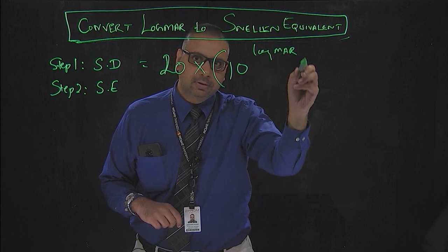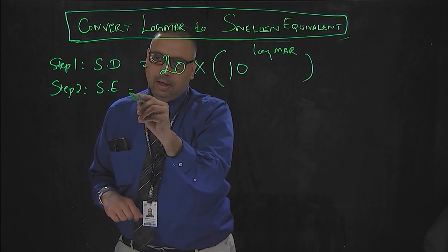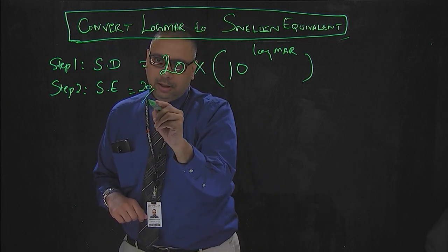I will show this with an example and then that means you will get a value for Snellen denominator and Snellen equivalent would be 20 by Snellen denominator.